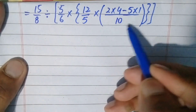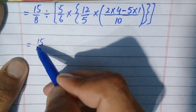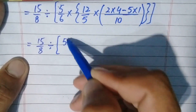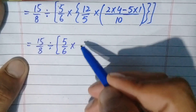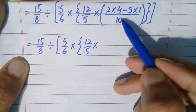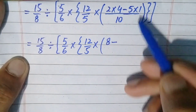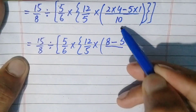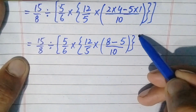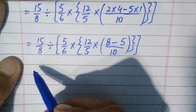We will further simplify the numbers inside the parentheses, writing the remaining question as: 15/8 divide, square bracket open, 5/6 multiply, brace open, 12/5. Let's simplify: 2 times 4 is 8, minus 5 times 1 is 5, over 10. So we write 10 in the denominator. Parenthesis close, braces close, square brackets close. Now further simplify the number inside the parenthesis.